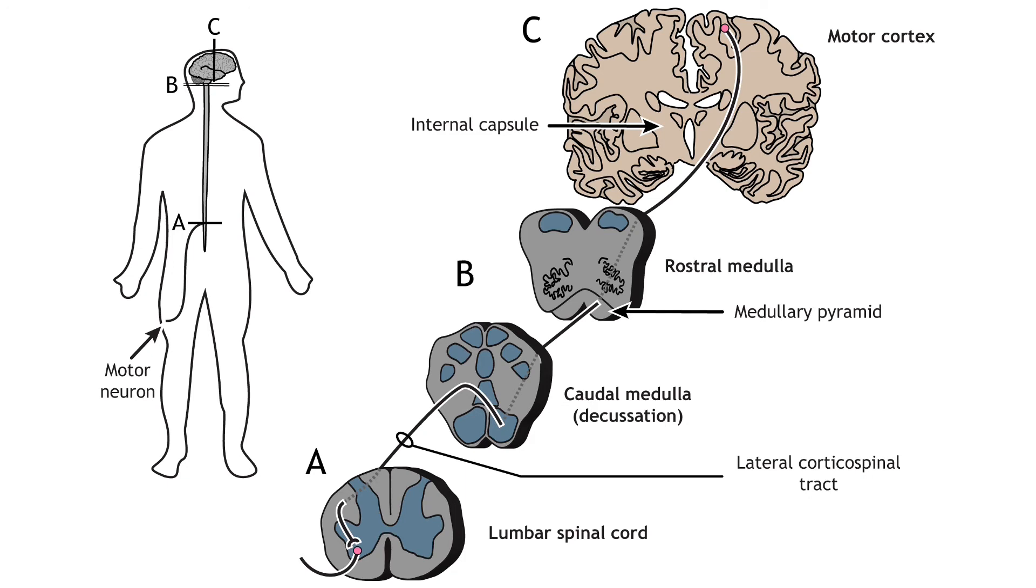Like the somatosensory system, the right side of the cortex processes information for the left side of the body and vice versa. In the spinal cord, the axons travel through the lateral column and synapse in the ventral horn on motor neurons that typically innervate distal muscles.